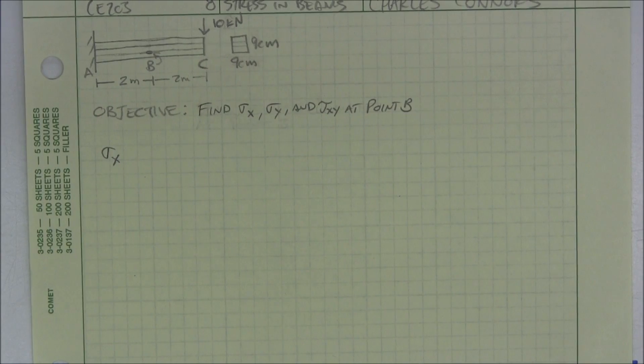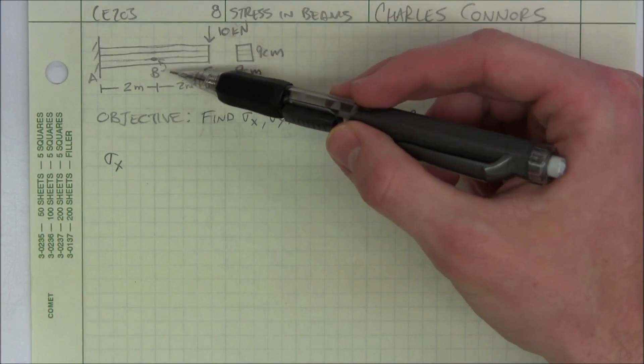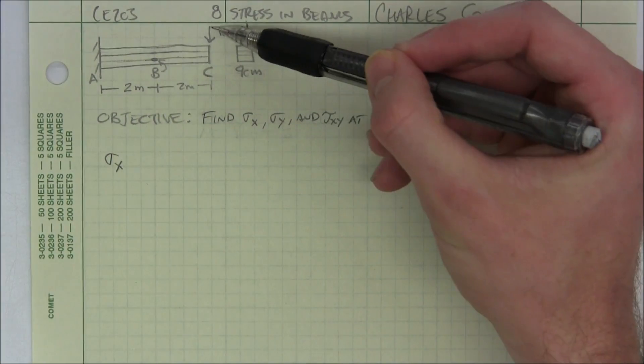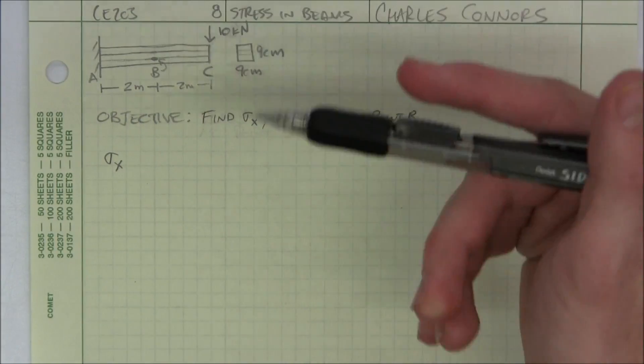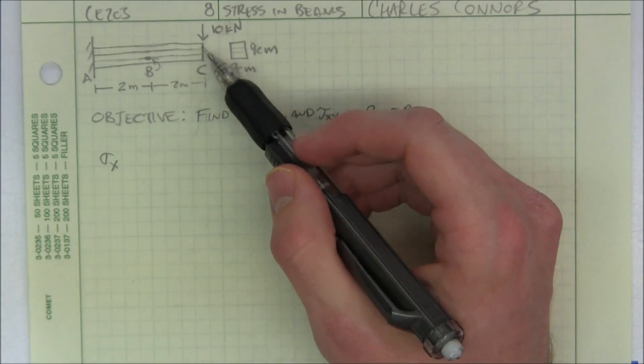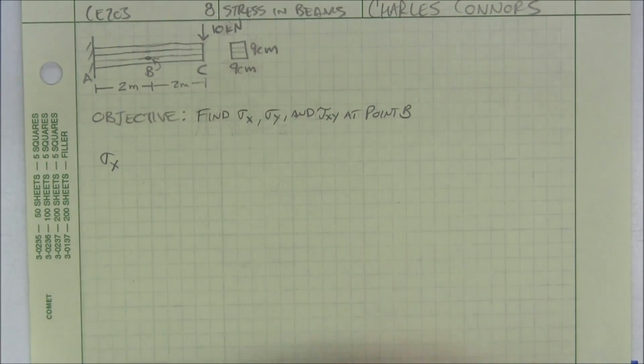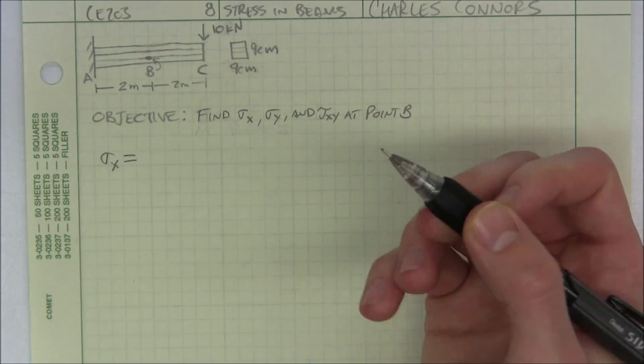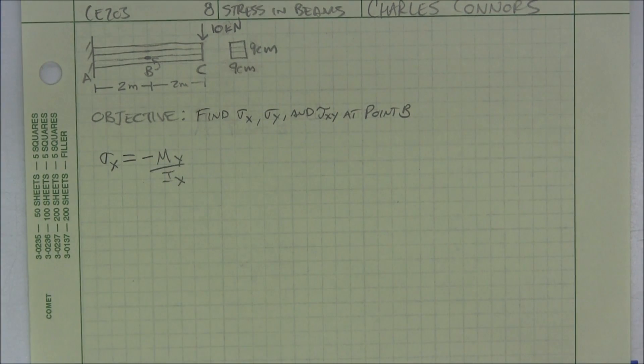So first, sigma x. Now I have to reason through what forces are going to be affecting in the x direction. My shear force right here, my load is not going to affect it vertically. It might deform it this way, but it's also going to create bending moment internally. And that's how it's going to affect point B. So I use this equation for bending moment stress.